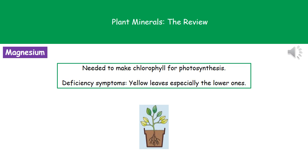The last mineral to remember is magnesium. Our plants need magnesium to make chlorophyll, which is needed for photosynthesis. If there isn't enough magnesium present, we get yellow leaves, especially those found lower down on the plant.